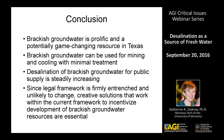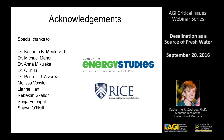In summary, brackish groundwater is a prolific and potentially game-changing resource in Texas. Texas, like much of the arid west, needs to either cut back demand for water or come up with more supplies. Brackish groundwater can be used for mining and cooling with minimal treatment, and desalination of brackish groundwater for public supply is increasing in the state. It's very important that as legislators try to incentivize development of brackish groundwater resources to decrease the gap between supply and demand, we come up with creative solutions that work within the preexisting legal framework. I'd like to acknowledge funding from the Center for Energy Studies and the Rice Energy and Environment Initiative.